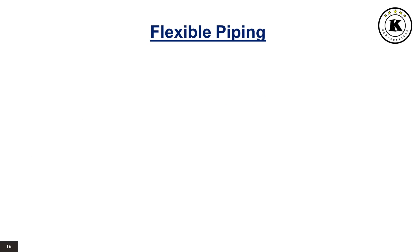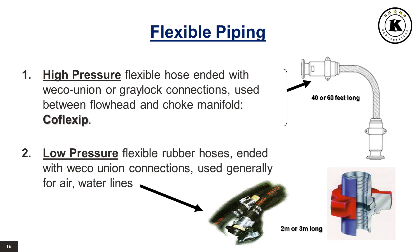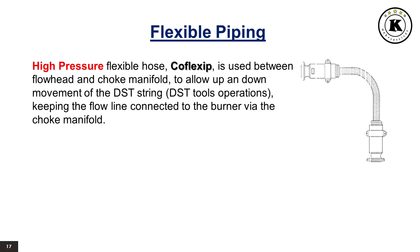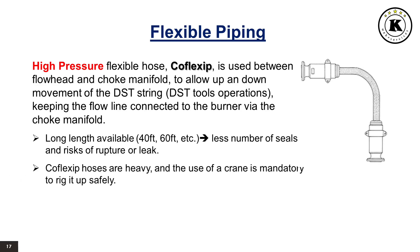Flexible Piping: High-pressure flexible hose, ended with Weco Union or Greylock connections, is used between the flow head and choke manifold — this is called CoFlexip. Low-pressure flexible rubber hoses, ended with Weco Union connections, are generally used for air and water lines. CoFlexip is also used between the flow head and choke manifold to allow up and down movement of the DST string during DST tool operations, keeping the flow line connected to the burner via the choke manifold. Long lengths are available — 40 feet or 60 feet — which reduces the number of seals and risks of rupture or leak. CoFlexip hoses are heavy, and the use of a crane is mandatory to rig up safely. To respect the MBR (minimum bending radius), a couple of elbows may be used at both ends of the CoFlexip hose.